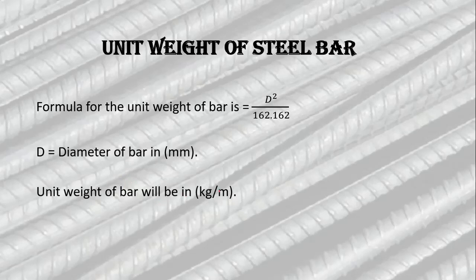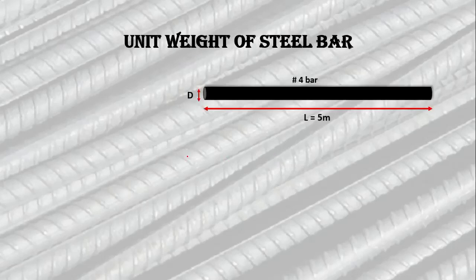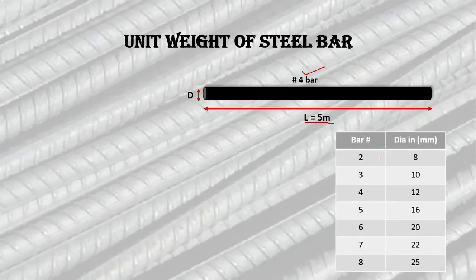Back to our example — we have a number four bar with a length of five meters. On the field there are many bars, but here I am taking only one bar. If you have multiple bars, you can multiply the weight by the number of bars to get the total weight. This table shows the bar numbers with their corresponding diameters.